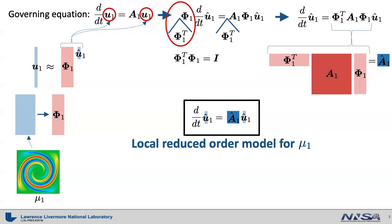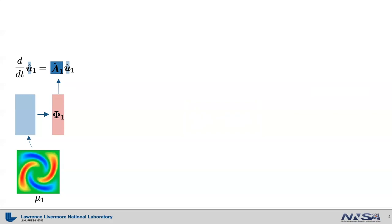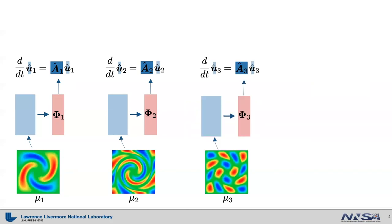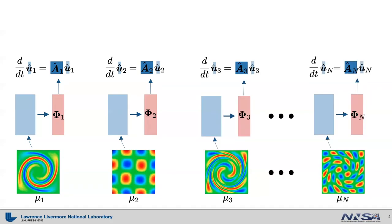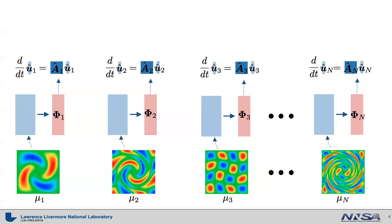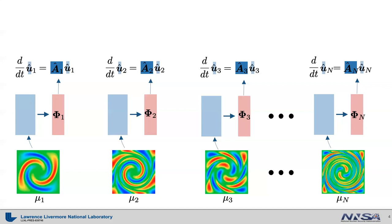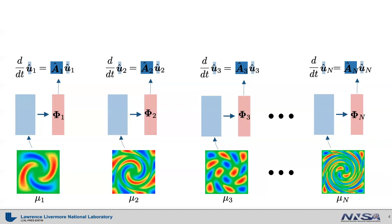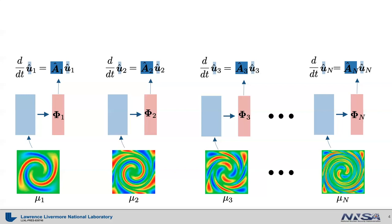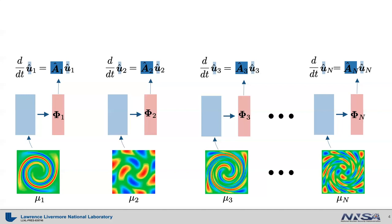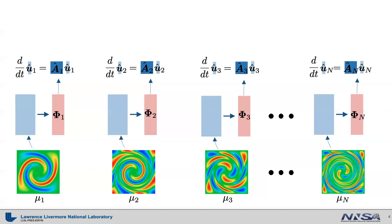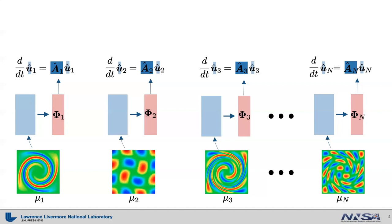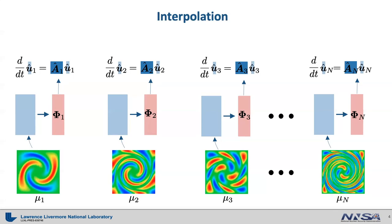The size of the local reduced order model is guaranteed to be small, which means the solution process will be very fast. We can build a local reduced order model for each training point — mu2, mu3, and so on up to mu sub n — each with a very small and fast solution. But what about a testing point that is not one of the training points? How can we use these trained local reduced order models to find a solution at a new testing point? The answer is to use interpolation.